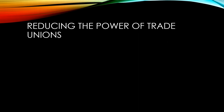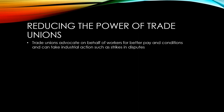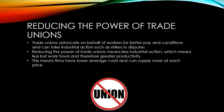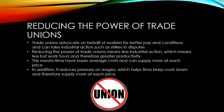Trade unions advocate on behalf of workers for better pay and conditions. If they are having a dispute, they can take industrial action such as strikes. By reducing the power of trade unions, we might expect to see less industrial action, which means less lost work hours and therefore greater overall productivity. This means firms have lower average costs and can supply more at each price. In addition, reducing the power of trade unions reduces pressure on wages, which also helps firms to keep their costs down and therefore be able to supply more at each price.